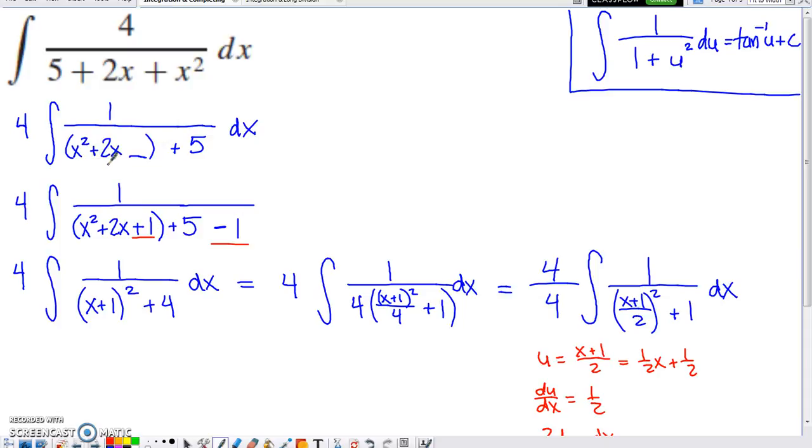And so if I use the process of completing the square, what number would I have to put in this empty spot right here in order to create a perfect square trinomial?